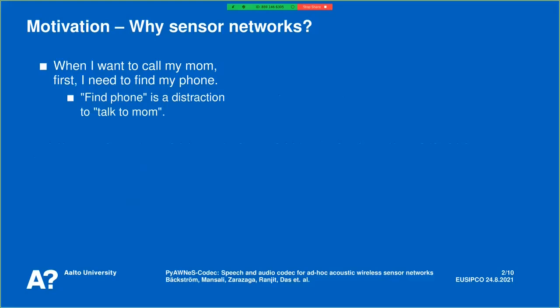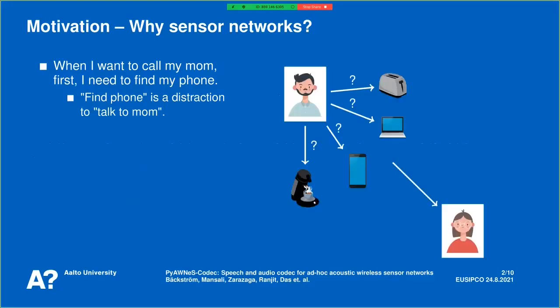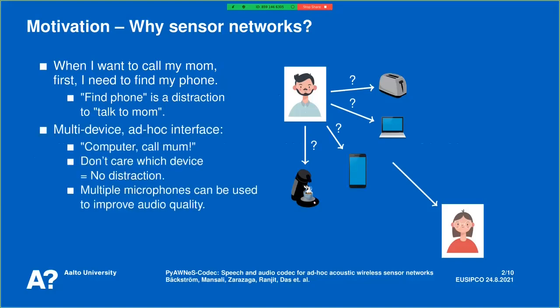The motivation for sensor networks is that when I want to make a phone call — let's say I want to call my mom — the first task I need to do is to find my phone. It's always lost somewhere. Finding the phone is a distraction from talking to the person I intend to talk to. What would be much nicer is if I could just say 'computer, call mom,' and I wouldn't need to care which device performs that action.